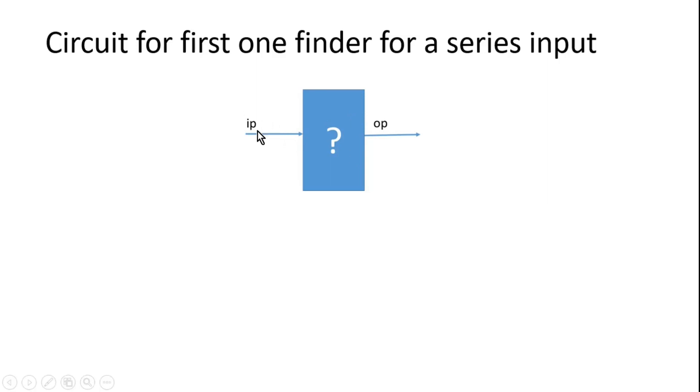where the input is serial input IP and OP is your output. OP should be only asserted when it detects first one in this series input IP, otherwise it should remain zero.